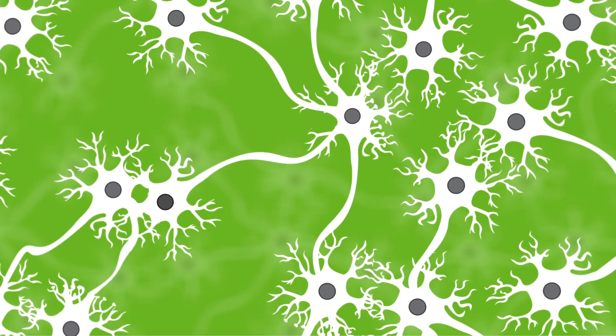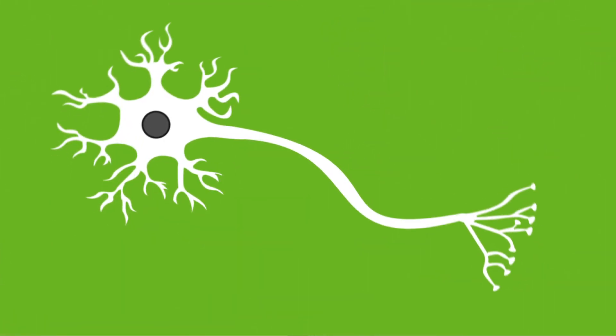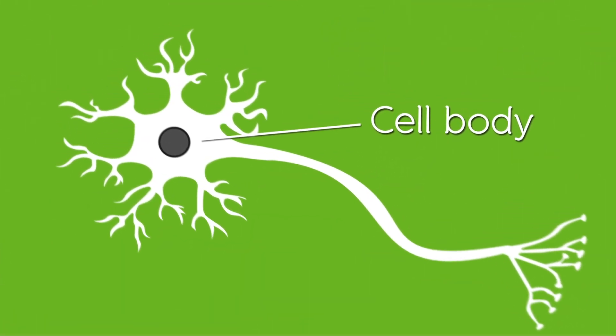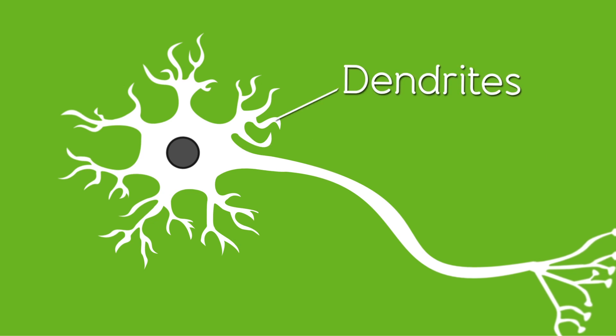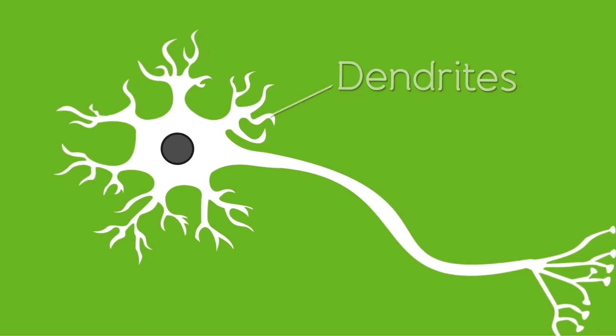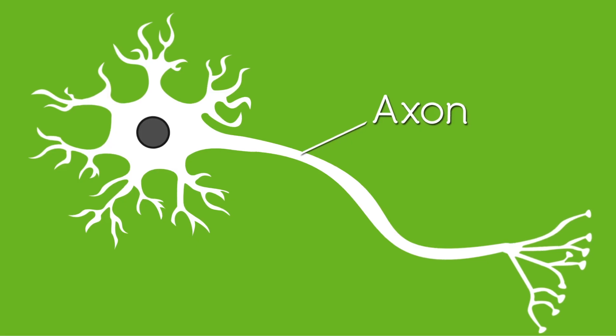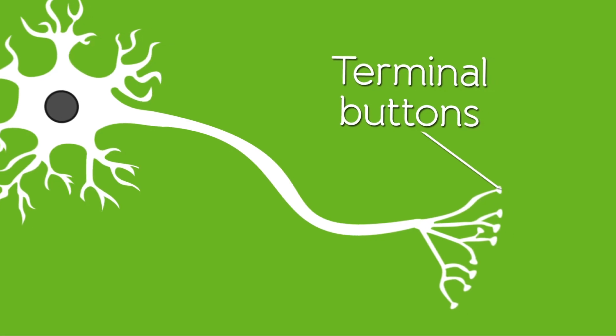Each neuron consists of the same basic structure: the cell body, which contains the nucleus and important genetic information, the dendrites that receive information from other neurons, and an axon which sends information down to its multiple terminals or end regions, which are known as the terminal buttons.